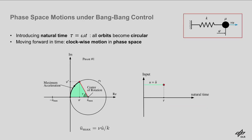How do the phase-space motions of the oscillating mass look like under bang-bang control? First of all, by introducing the natural time Ta, the elliptical orbits become circular. The natural time is obtained by scaling the real time with the natural frequency of the oscillating mass. By moving into the complex plane, it is straightforward to show that moving forward in time always corresponds to clockwise motions on these orbits. The centers of these circular orbits are defined by the system parameters and input bounds, and those are fixed.